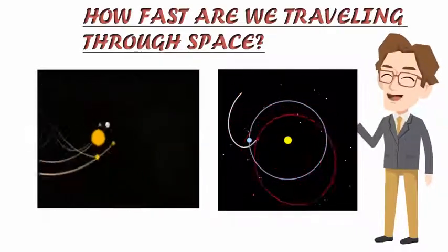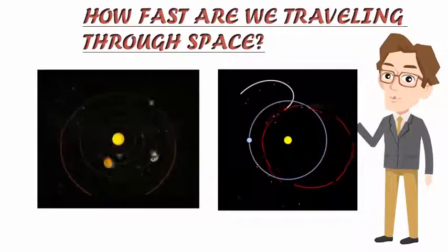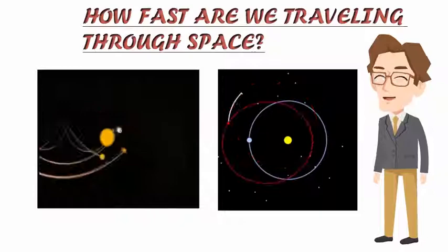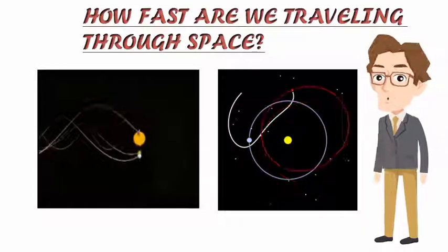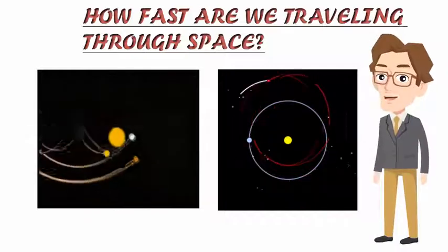Actually, rotational speed around the earth is also dependent on altitude above sea level, and a person at the top of a mountain on the equator is actually traveling faster than 1660 km per hour as he has further to go with each revolution.